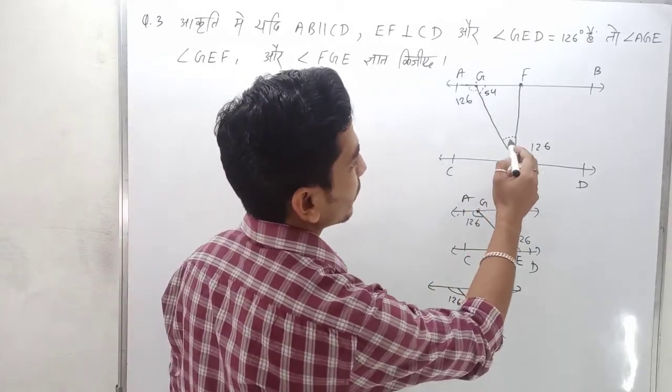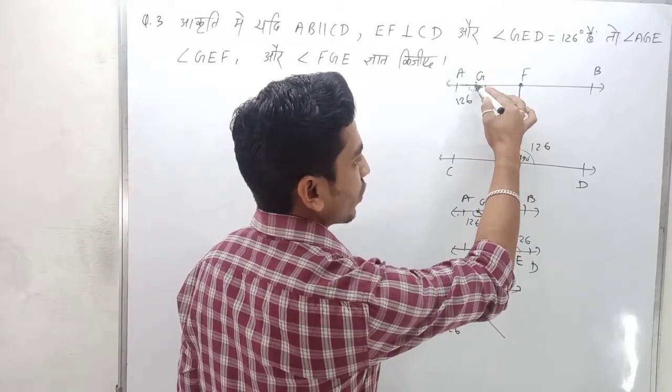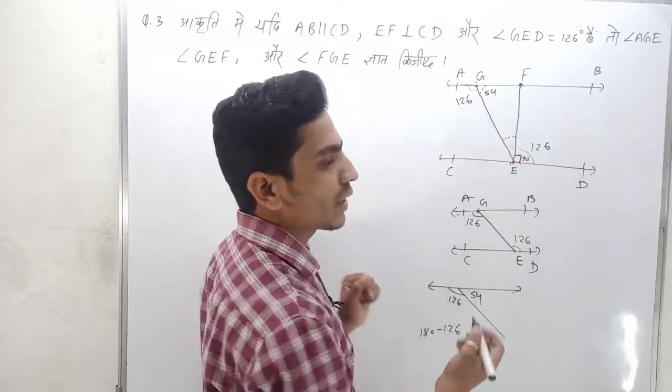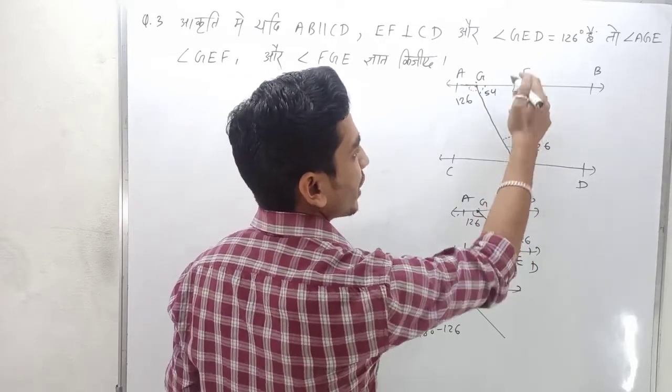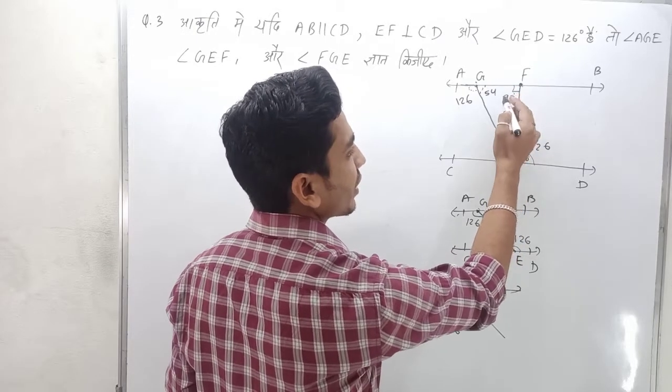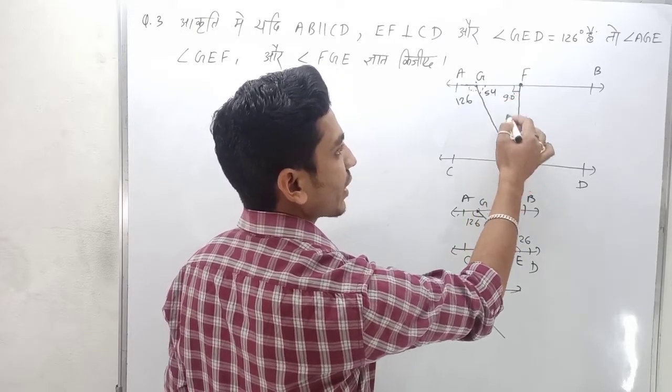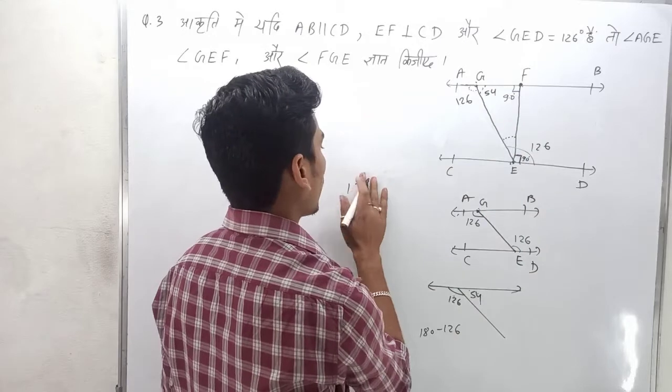Now you have angle 54. So this is a triangle ZEF. Using angle sum property, this is perpendicular so it's 90 degrees. This is 54, and the three angles sum to 180.